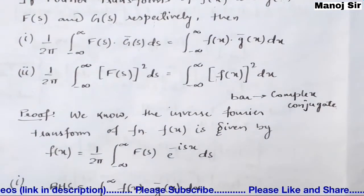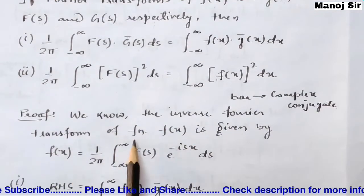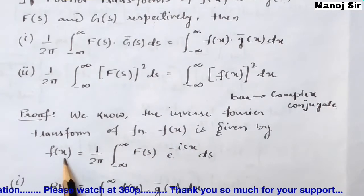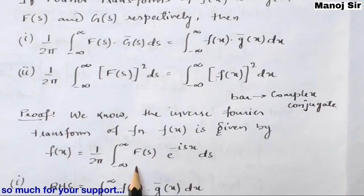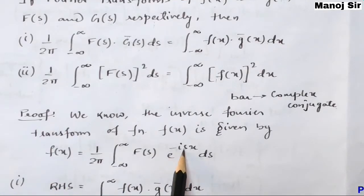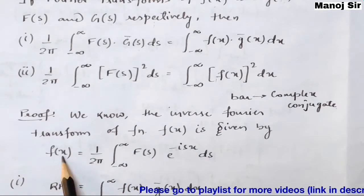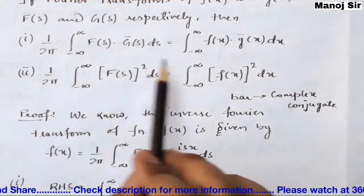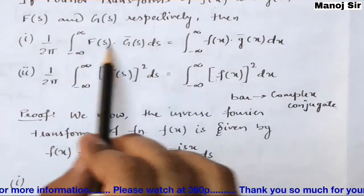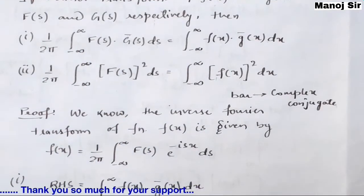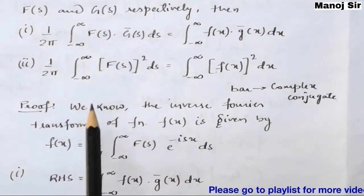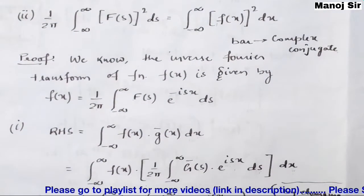Since we know that the inverse Fourier transform of any function f(x) is given by: f(x) = (1/2π) ∫₋∞^∞ F(s) · e^(−isx) ds. We will use this to prove both identities, starting with the first part. I will take the RHS part and check whether it equals the LHS.